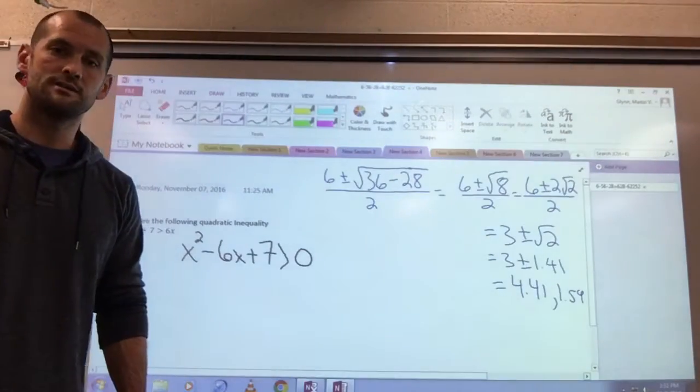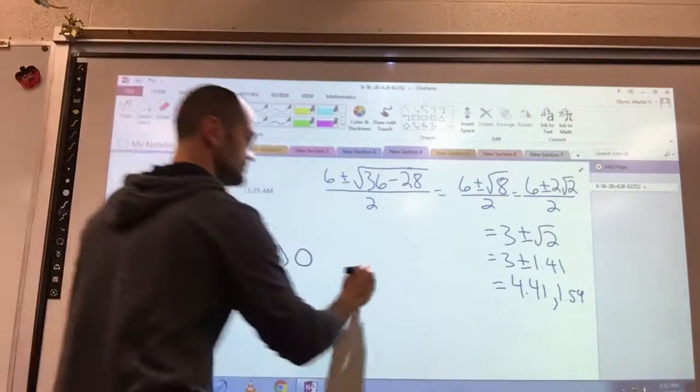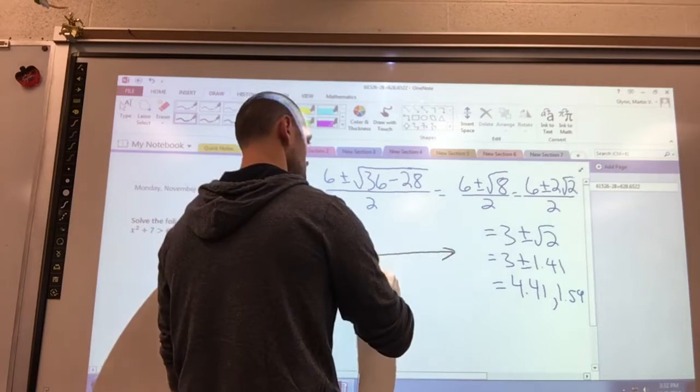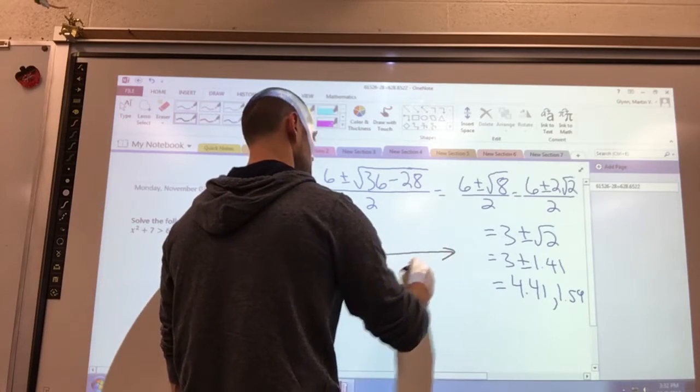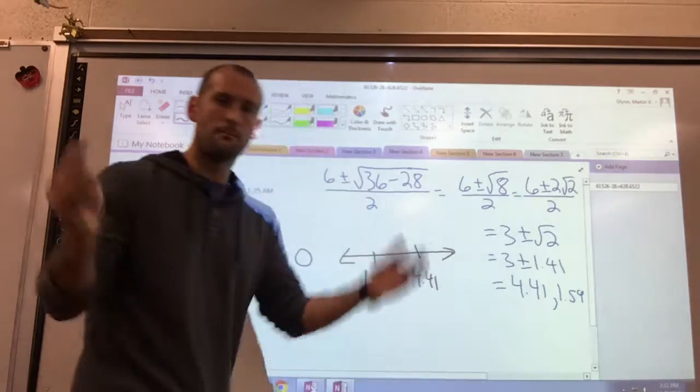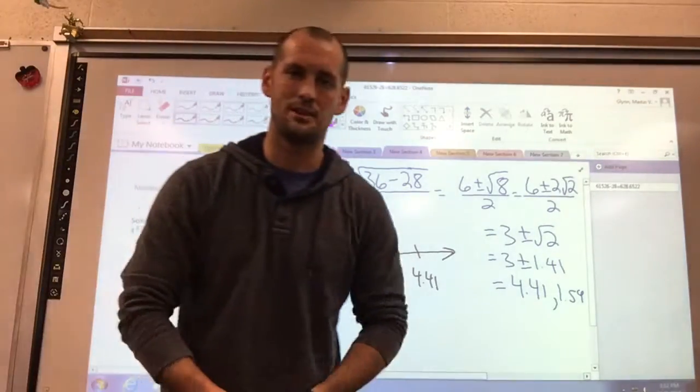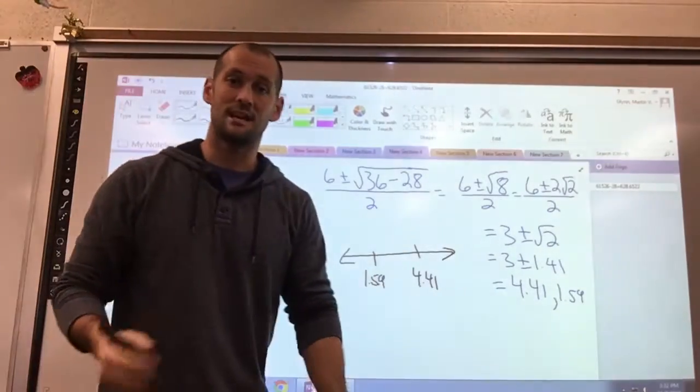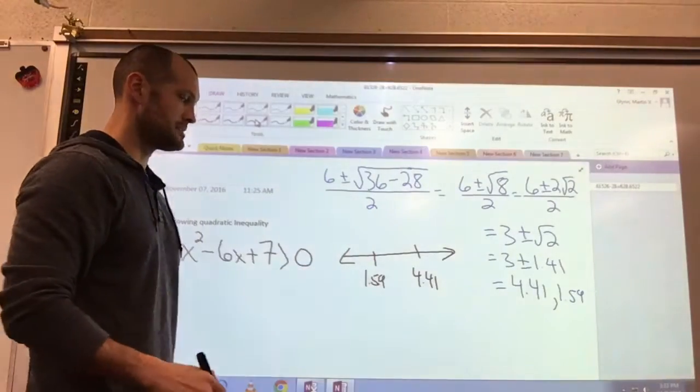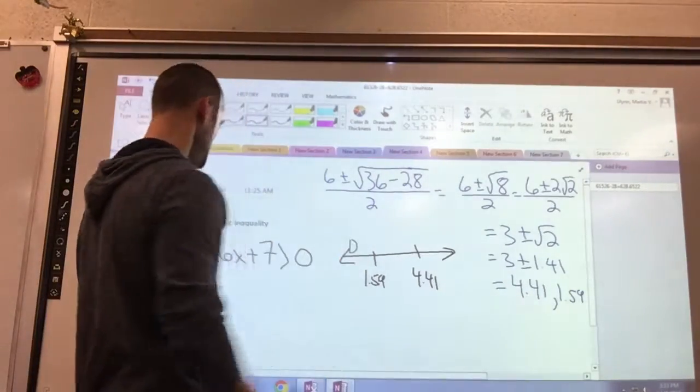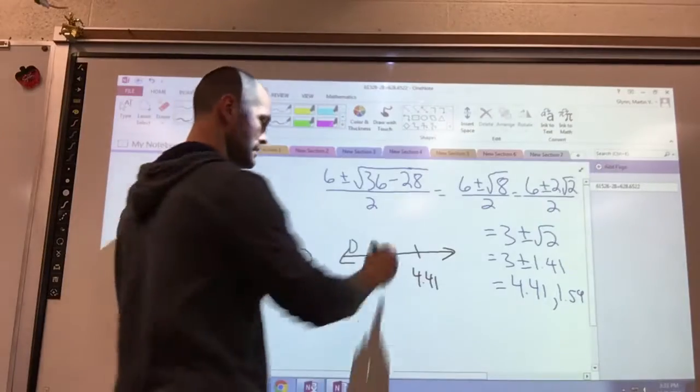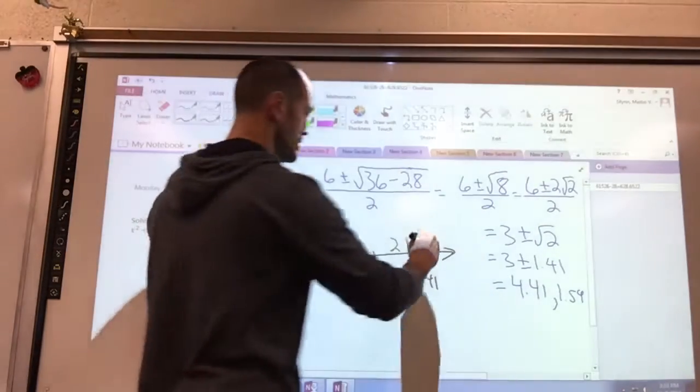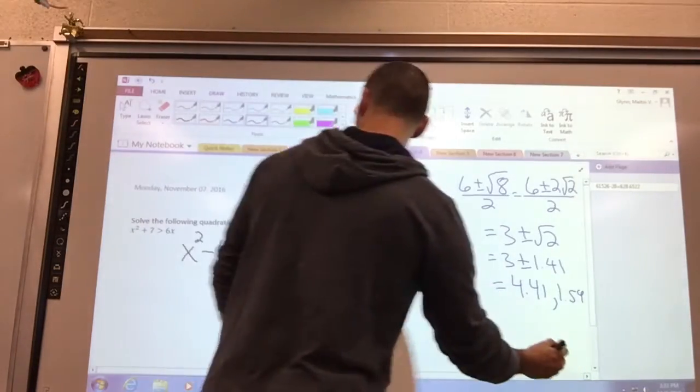So let's find out where our answers lie. I'm going to use the number line now. I know that 1.59 and 4.41 are really my border points. All my answers hinge upon those two values, so I need to pick numbers in all three areas of the graph and test them. So I'm going to pick a number less than one—zero sounds pretty good. I'm going to pick a number between one and four—two sounds good. And I'm going to pick a number greater than four—let's go with five.